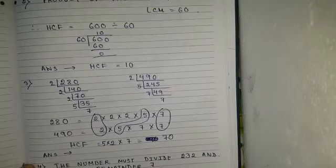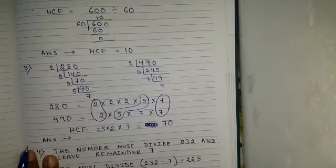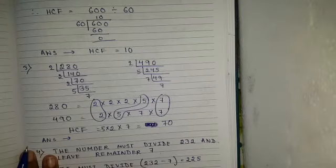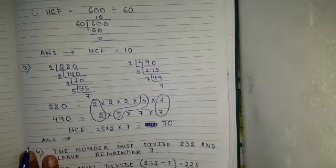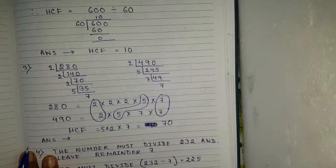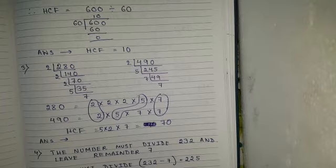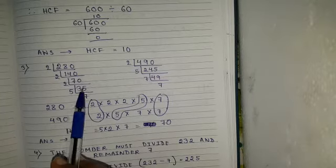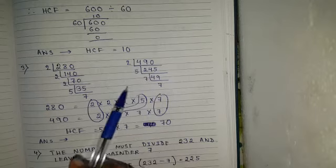Question number 3: find the largest number that divides 280 and 490 without leaving a remainder. When finding a largest number, remember that finding the HCF of the two numbers gives the largest number. Here we are using the prime factorization method to get the HCF.